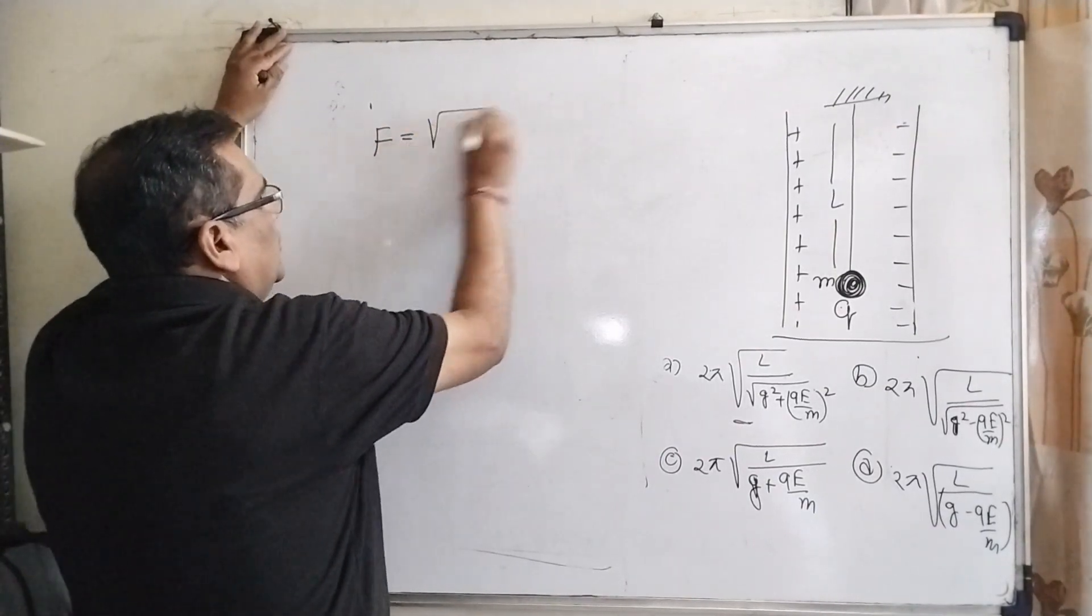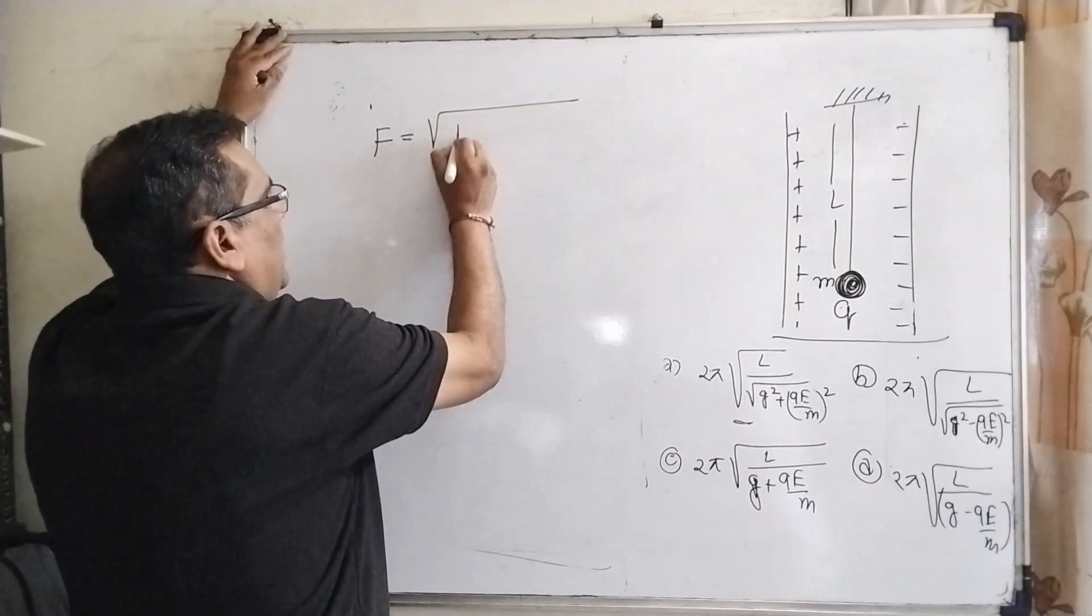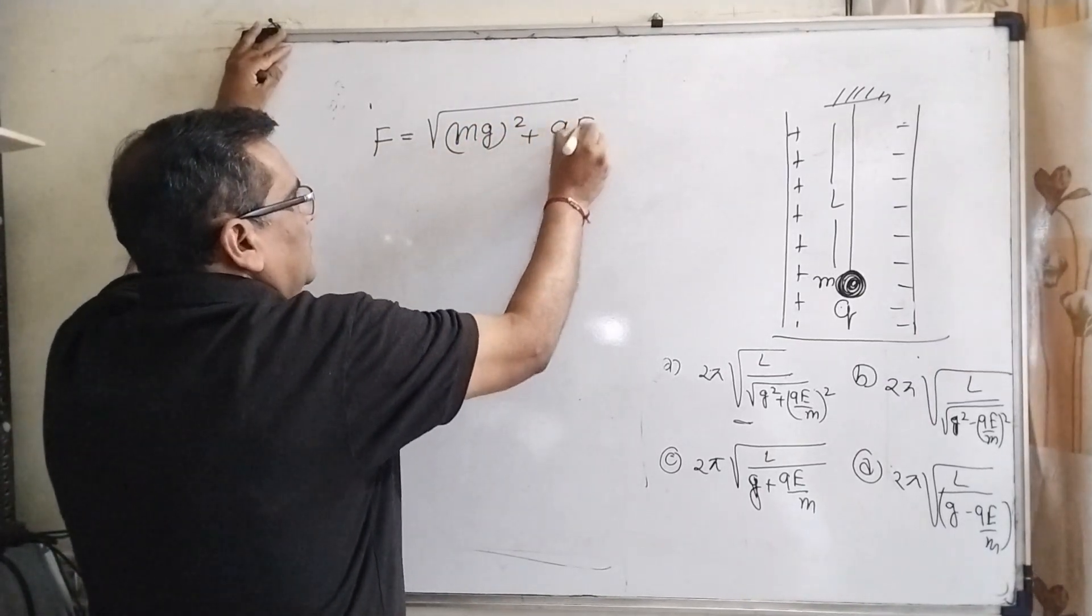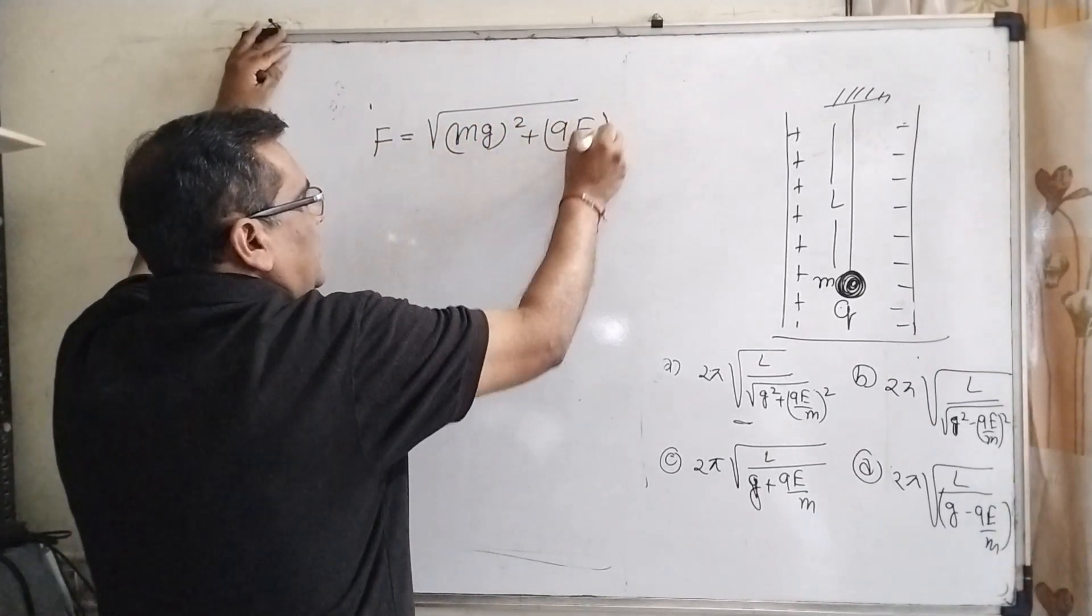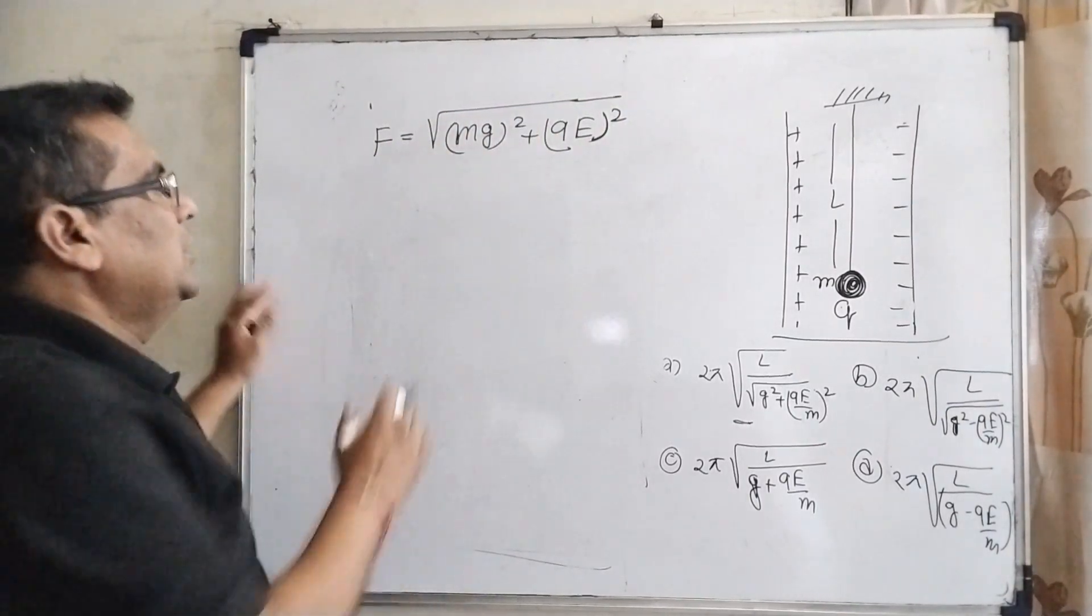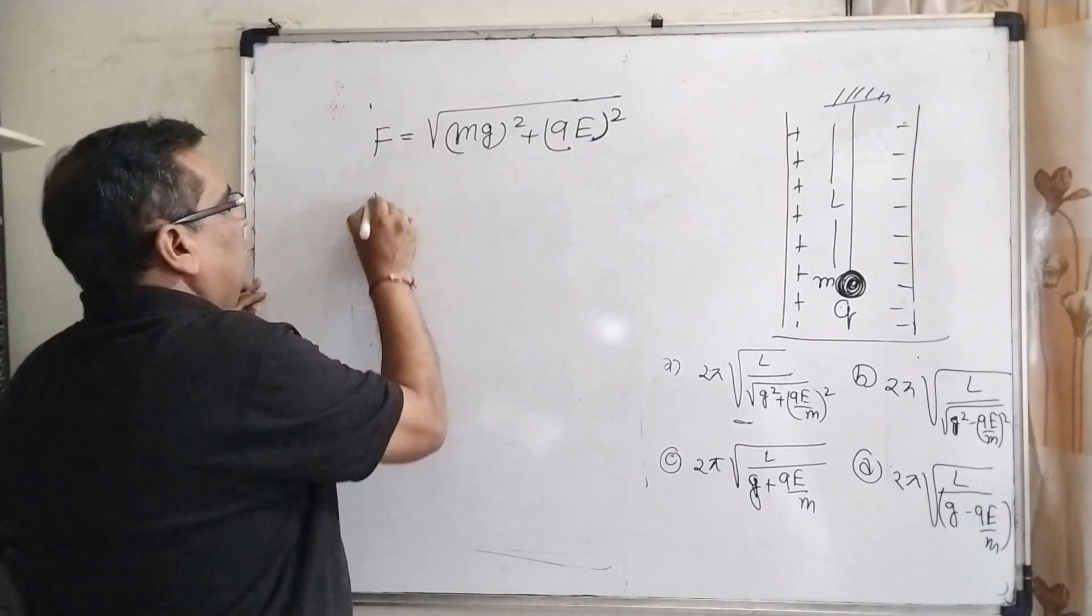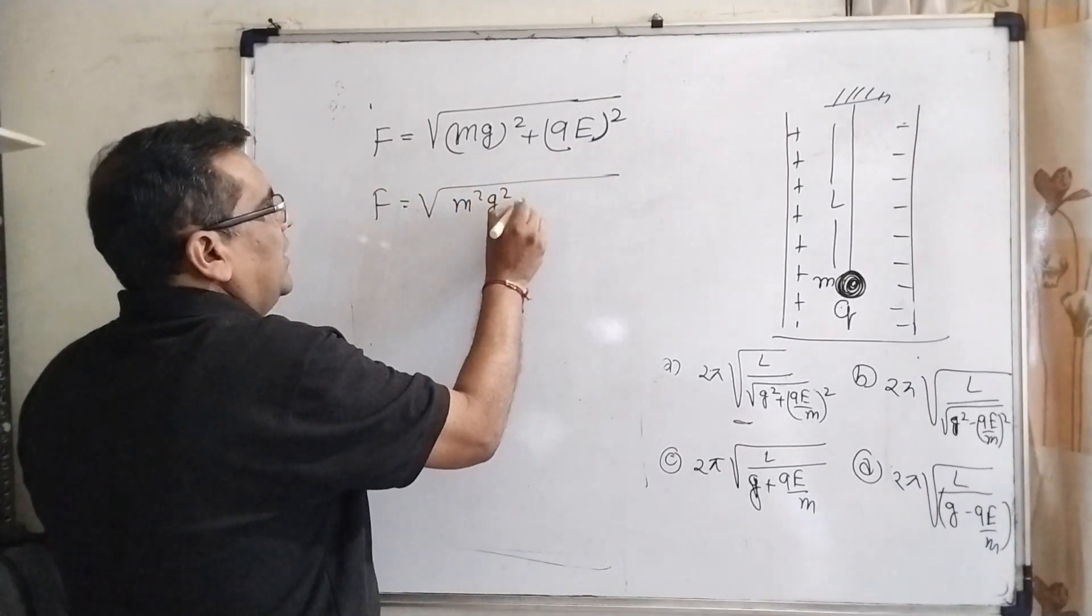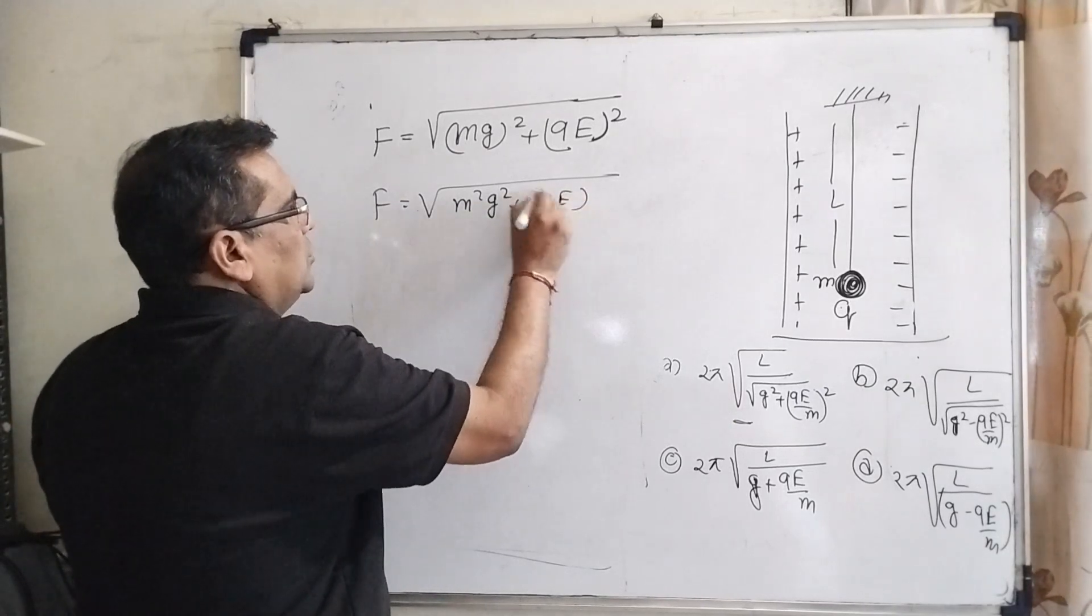Resultant force equals: here Mg acts downward direction and qE to the right side of this plate. So it is √((Mg)² + (qE)²). Now you can see that M²g² + (qE)².